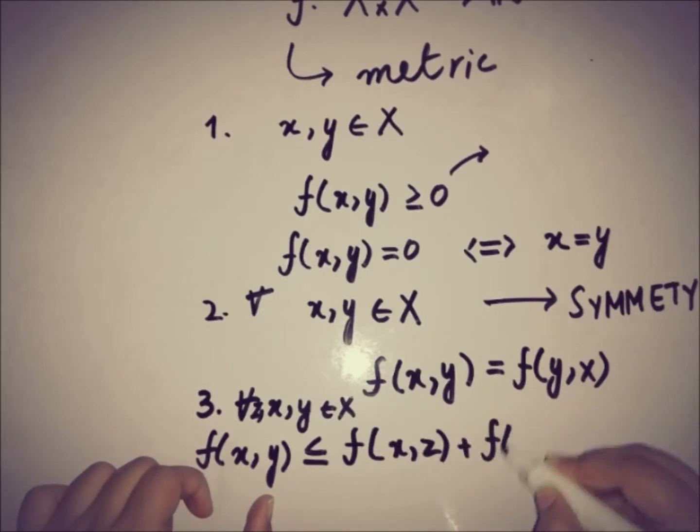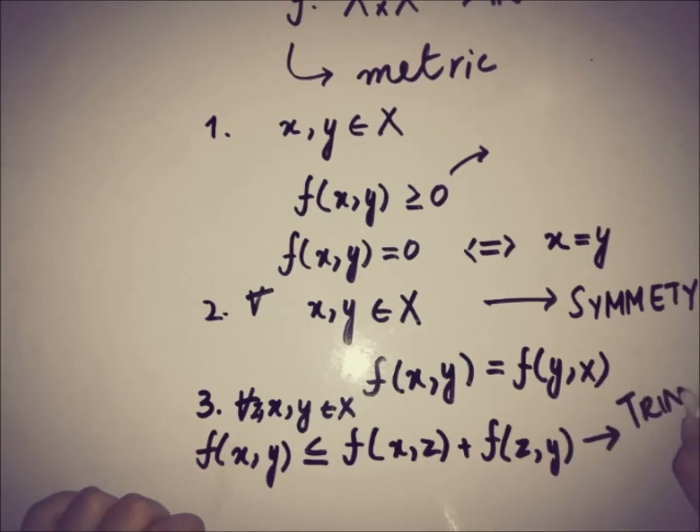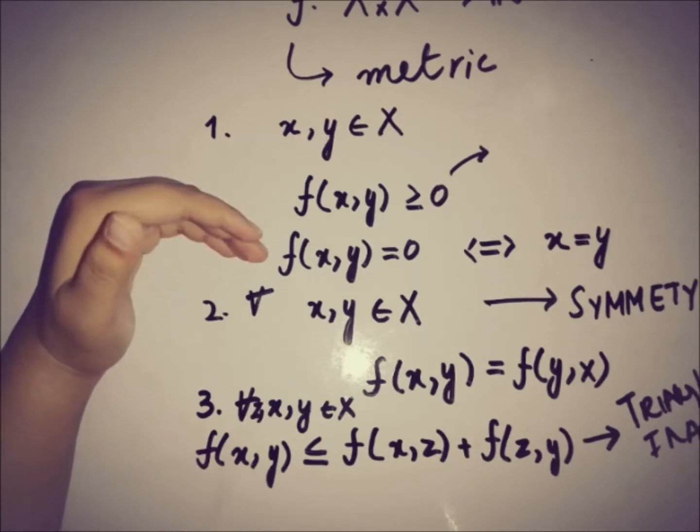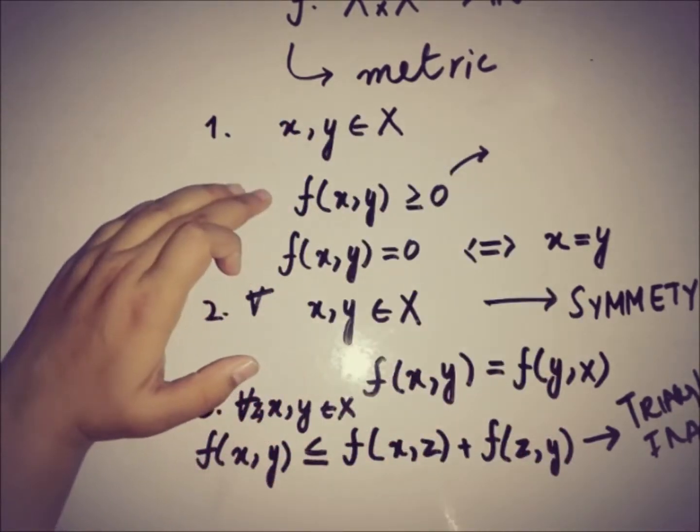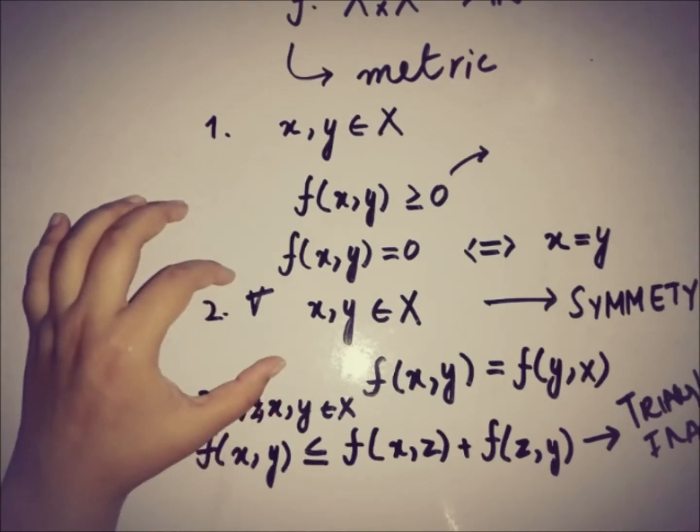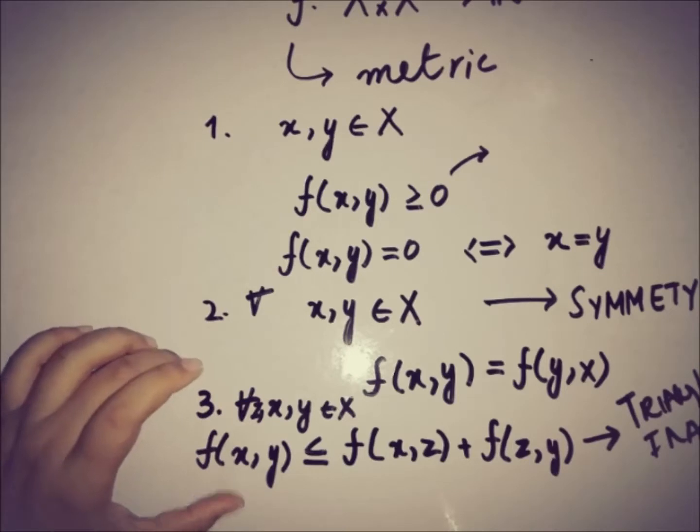So this is the triangular inequality of the function. By looking at the properties of the function f that is defined from X cross X to R, this function has similarity with the distance function. Distance can never be zero; if the distance is zero then we can say that the point is the same, initially the final point is same. Distance is always positive. The distance has a symmetry property in it and also triangular inequality.